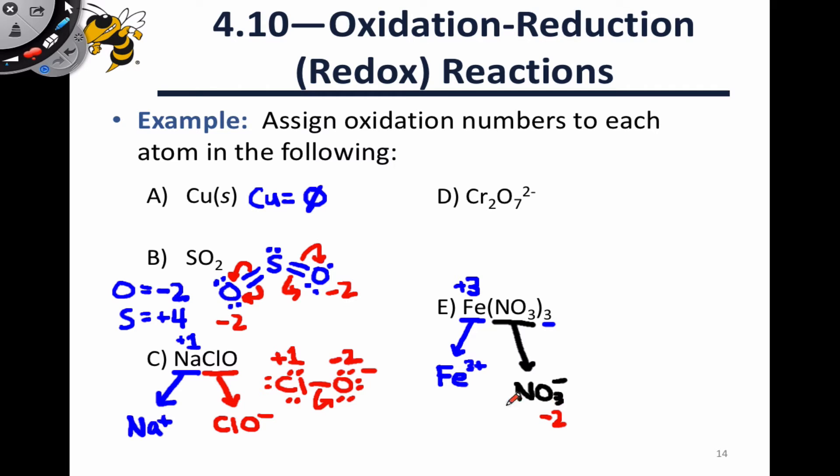Which means that the nitrogen atom in NO3- has to have an oxidation state of plus five. The three oxygen atoms add up to minus six, the single nitrogen adds up to plus five, the sum is negative one, which is consistent with the total charge on the anion.